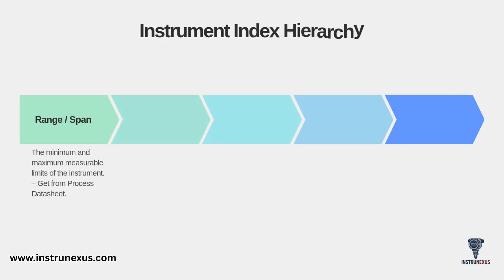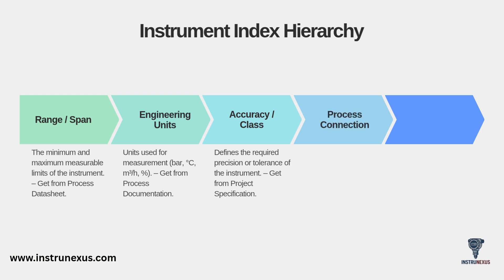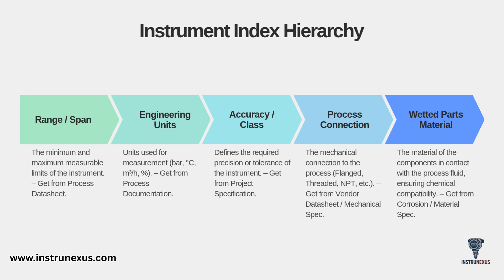Continuing with the Index Hierarchy, we get into more specific engineering details. You must define the range or span — the minimum and maximum measurable limits of the instrument, obtained directly from the process datasheet. Alongside this, you list the engineering units, such as bar, degrees C, or percent. You'll also specify the required accuracy or class, which defines the instrument's precision and is usually found in the main project specification. Then come the physical details: the process connection type, like flanged or threaded, and the wetted parts material — critical for ensuring chemical compatibility with the process fluid, from the corrosion or material specification.